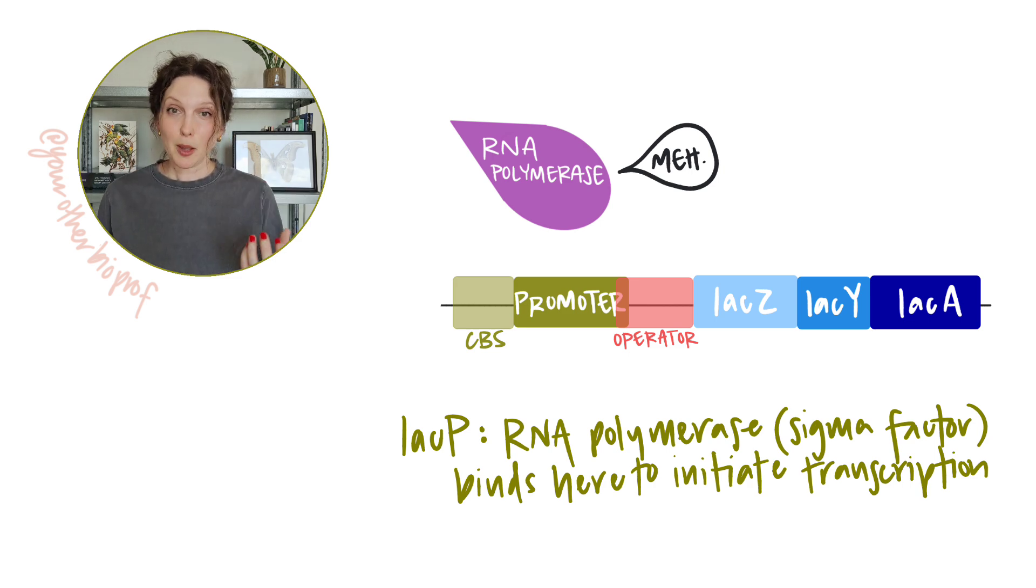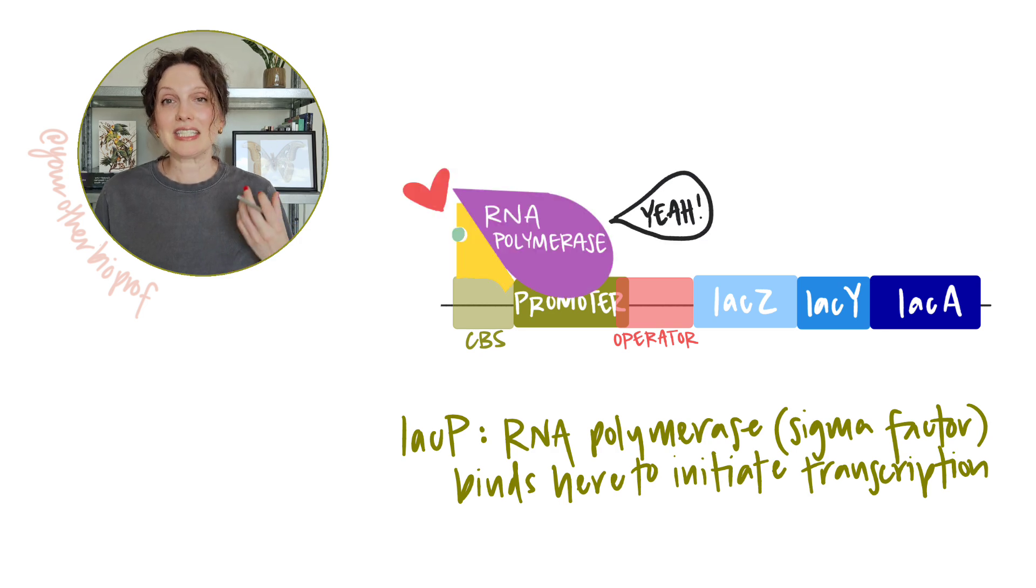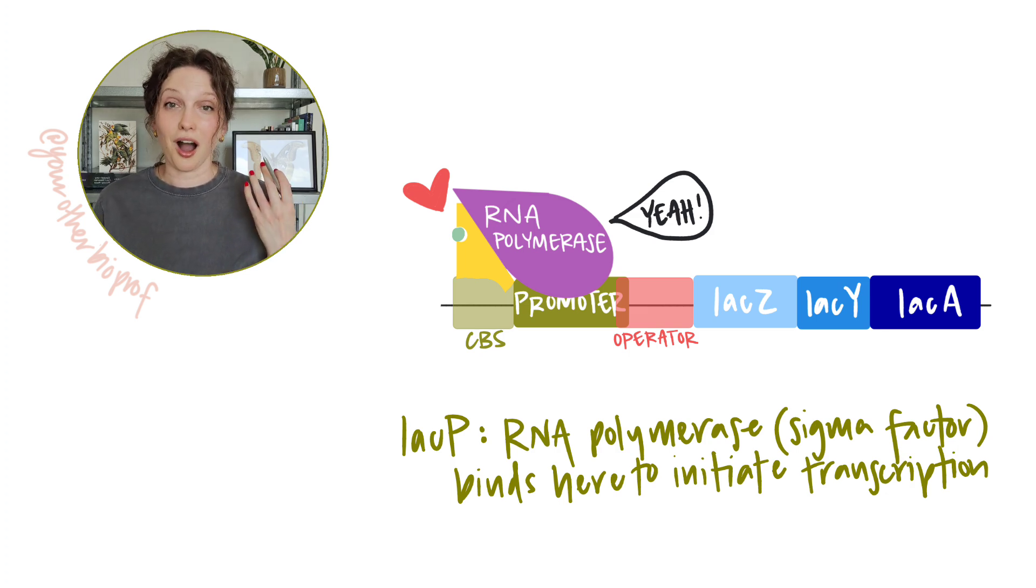But the CAP protein can come in and stabilize the interaction between RNA polymerase and the promoter. And that means that transcription is going to happen more often. More initiation of transcription means more transcription and more product from those structural genes, more of the enzymes to metabolize the lactose.